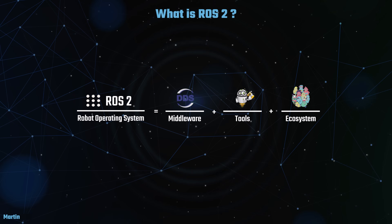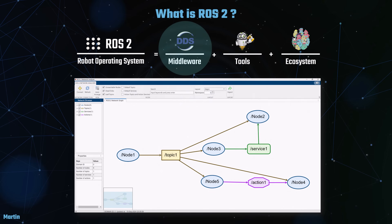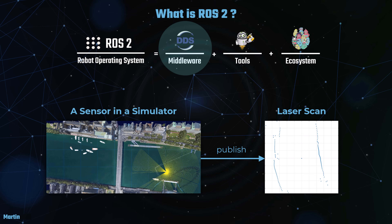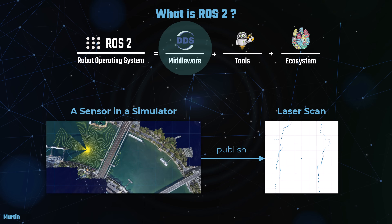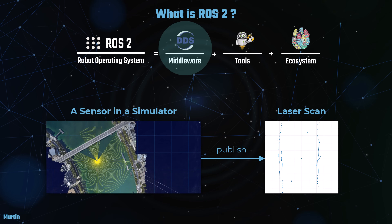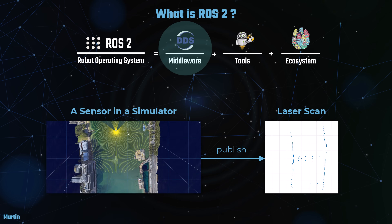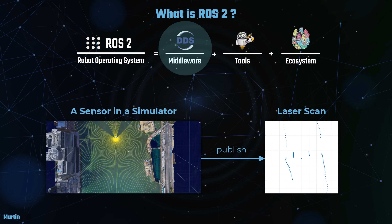ROS2 can be understood as a combination of three core components: middleware, tools, and ecosystem. At its heart, ROS2 utilizes a middleware layer based on the Data Distribution Service, DDS, which facilitates efficient communication between distributed components. For example, imagine a sensor running within a simulator environment. This sensor continuously gathers data, such as distance measurements. Using ROS2, the sensor publishes this data to a network of other components. This seamless data exchange is made possible by ROS2's efficient communication framework, enabling real-time interactions and coordinated responses across the robotic system.